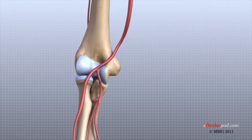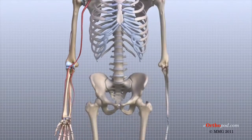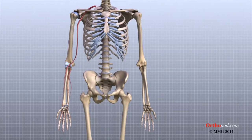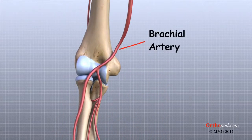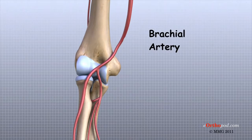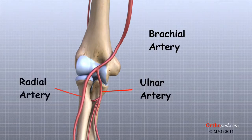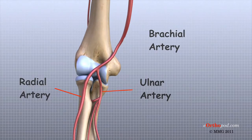Traveling along with the nerves are the large vessels that supply the arm and hand with blood. The largest artery is the brachial artery, which travels across the front crease of the elbow. If you place your hand in the bend of your elbow, you may be able to feel the pulsing of this large artery. The brachial artery splits into two branches just below the elbow: the ulnar artery and the radial artery. These two branches continue into the hand. Damage to the brachial artery can be very serious because it is the major blood supply to the forearm and hand.